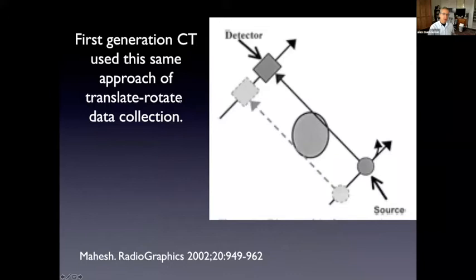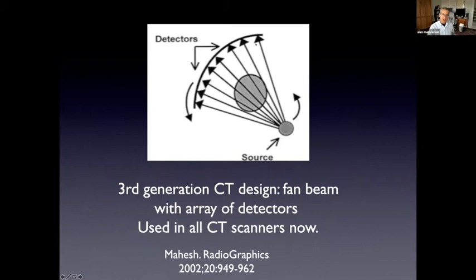So these first CT scanners used this technique of translate-rotate. And so we had a detector and a source that would move around the patient. And eventually this became what was known as the third generation design. There was an x-ray source with a fan beam and a curved set of detectors. Now this is what's used in all of the scanners now.